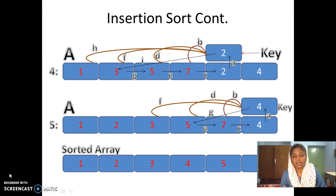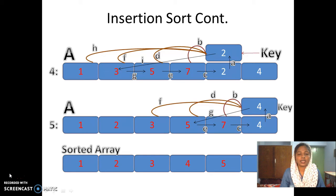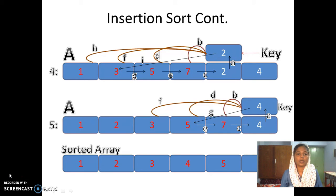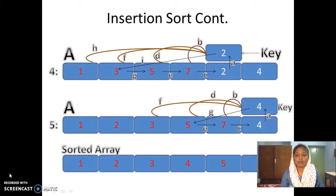For the next item 2, we compare 2 against 7 — 7 is greater, so we move 7 one position right. Then 2 against 5 — we move 5 one position right. Then 2 against 3 — 3 is greater, so we move one position right. Finally, when we compare 2 against 1, we know 1 is less, so we insert 2 in the position where 3 was originally residing. When we finish, all the elements are sorted.